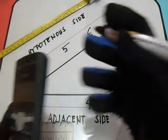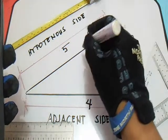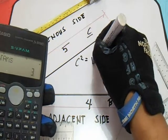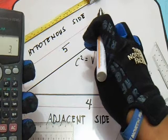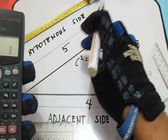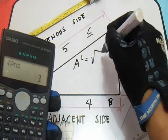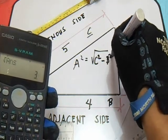So the formula for that is C squared equals square root of... this is A squared: C squared minus B squared.